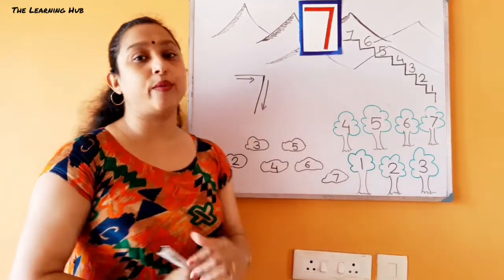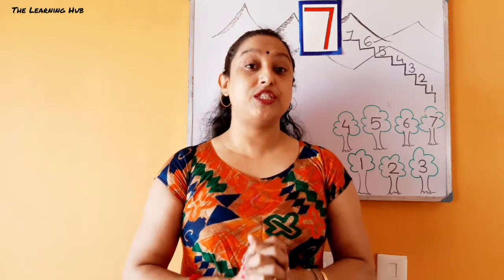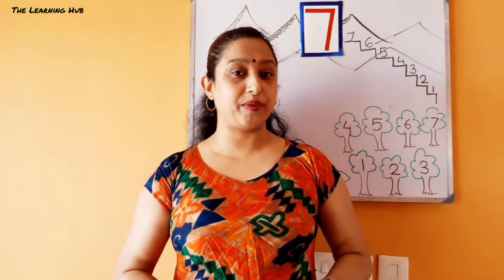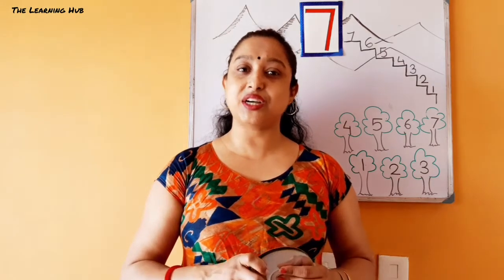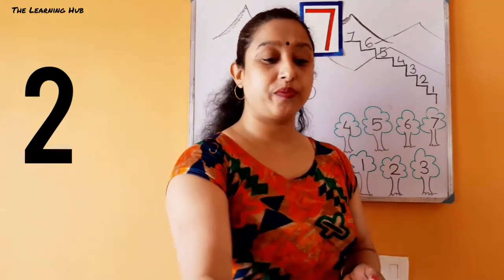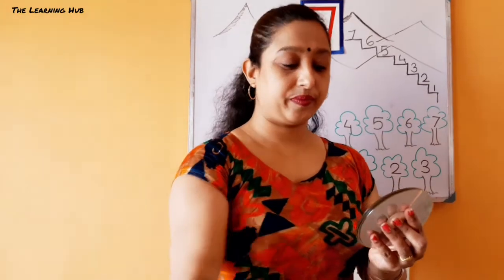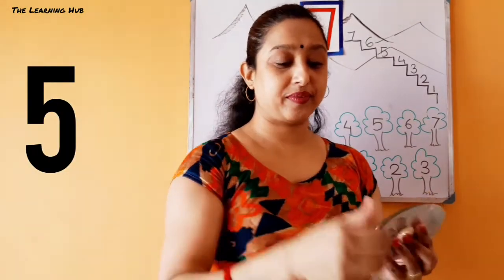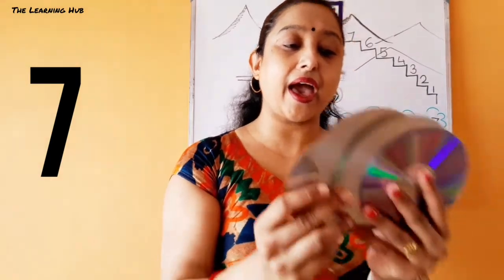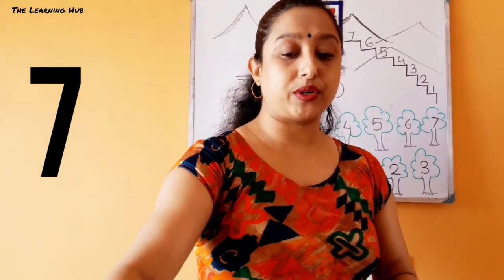Yes, this is how we write number seven. Children, now we are going to count different objects. Everyone pay attention and count very carefully. I have some CDs, so let's start counting: one, two, three, four, five, six, seven. So I have seven CDs!